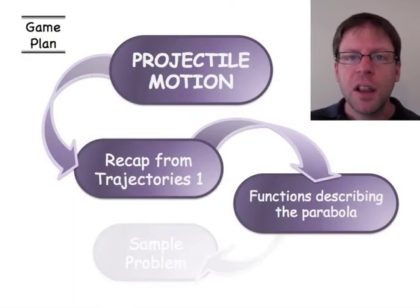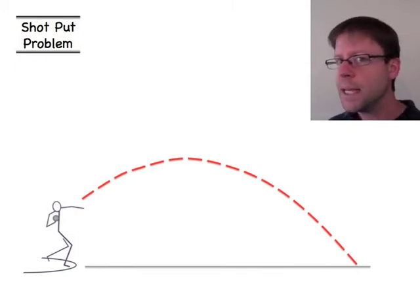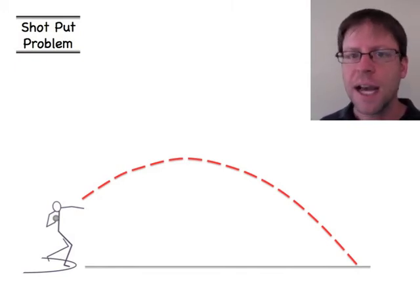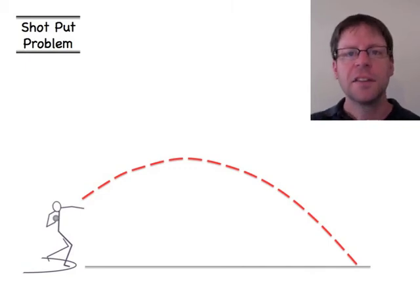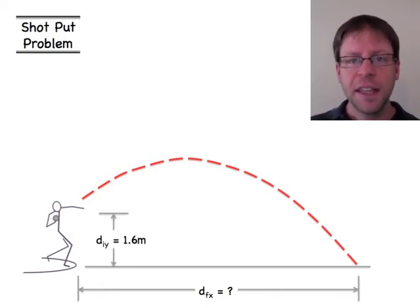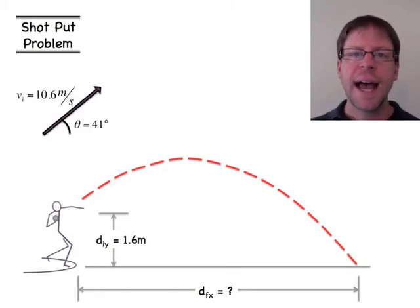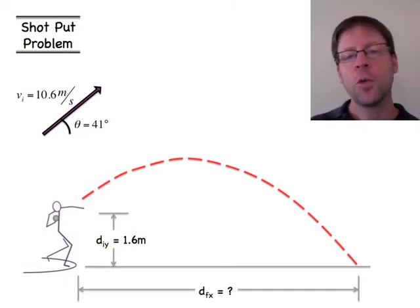So now let's see how we can put all of this together into a sample problem. I happen to be a track coach. Let's use a shot put throw here as an example. So the throw is not going to be something that starts from ground height and then lands at ground height. There's some height associated with the thrower. I would like to know how far this thing is going to travel given the initial information that the throw is released 1.6 meters above the ground. And it has an initial velocity of 10.6 meters per second at 41 degrees.